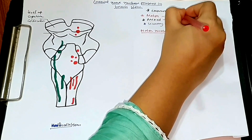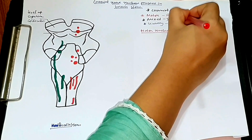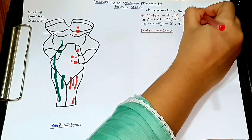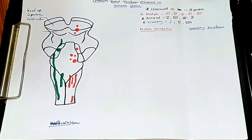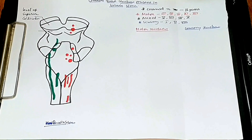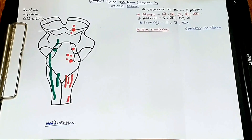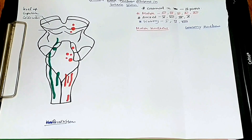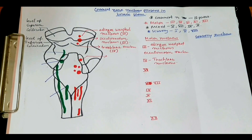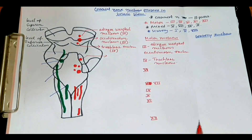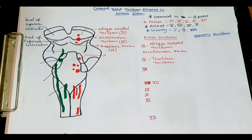The motor cranial nerves are number three, number four, number six, number eleven, and number twelve. I have written the motor nerves in red color, mixed in black, and sensory in blue color so that you can understand easily. I have written all the motor nuclei of the cranial nerves here in red color.